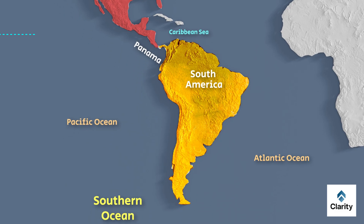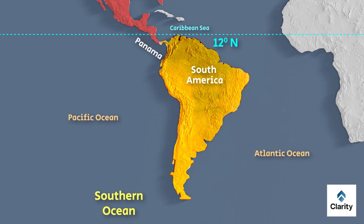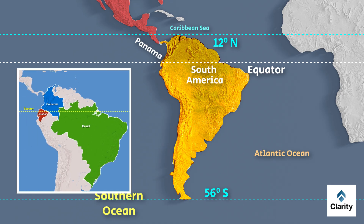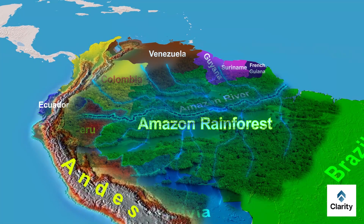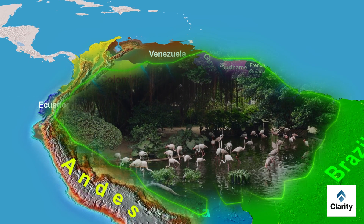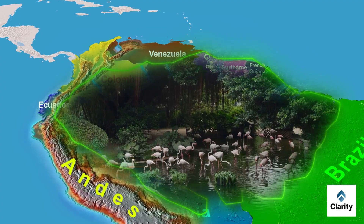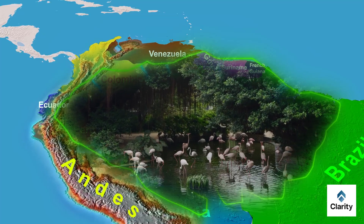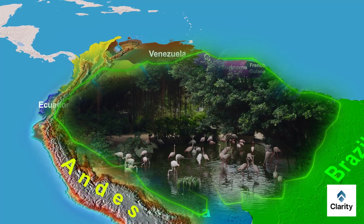South America extends from about 12 degrees latitude in the north to about 56 degrees latitude in the south. The equator passes through the northern part of the continent, crossing Ecuador, Colombia and Brazil. The great Amazon Rainforest lies near the equator. It is the largest tropical rainforest in the world, covering about 5.5 million square kilometers. It is home to millions of species of plants and animals, many found nowhere else, and plays a major role in producing oxygen and regulating the global climate.